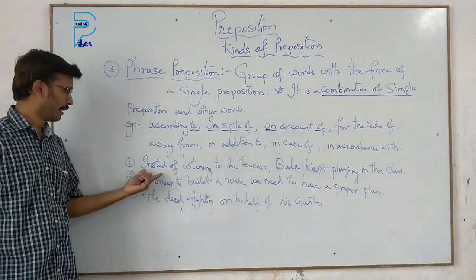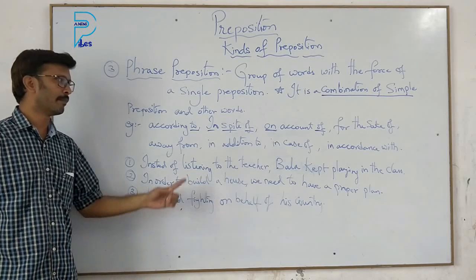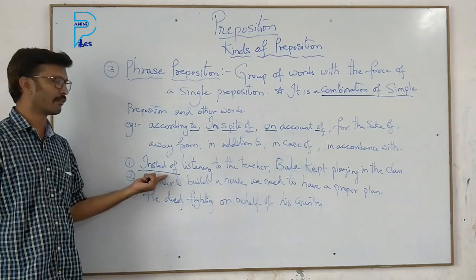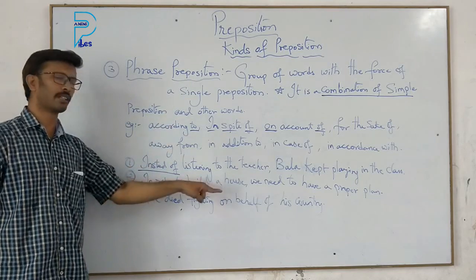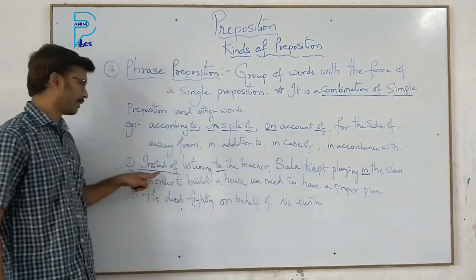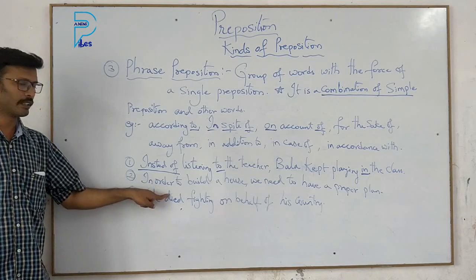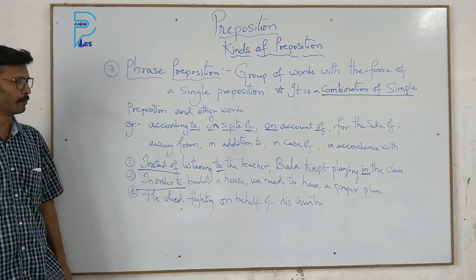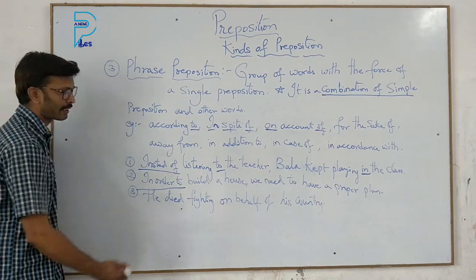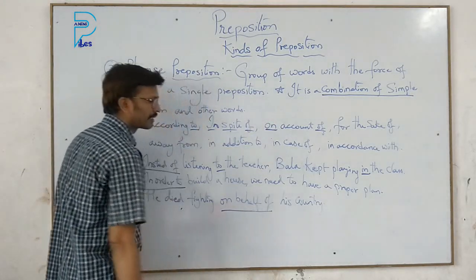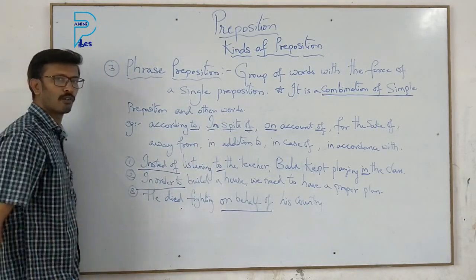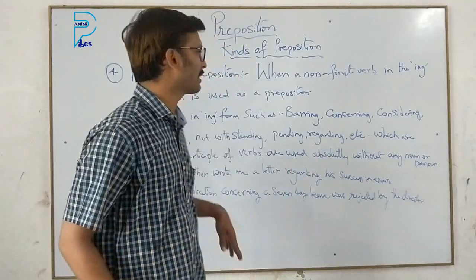Here are phrase prepositions used in sentences: 'Instead of listening to the teacher, Bala kept playing in the class' — 'instead of' is a phrase preposition. 'In order to build a house, we need to have a proper plan' — 'in order to' is a phrase preposition. 'He was fighting on behalf of his country' — 'on behalf of' is a phrase preposition.